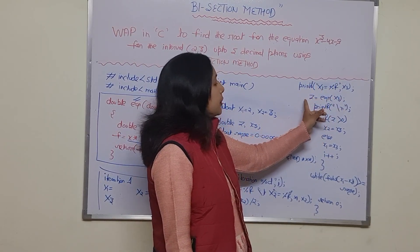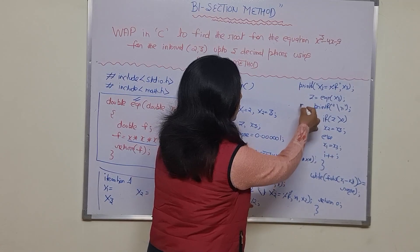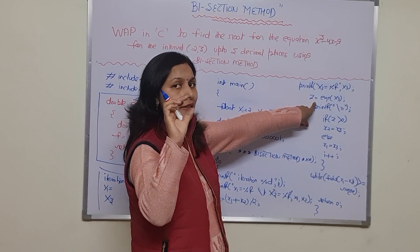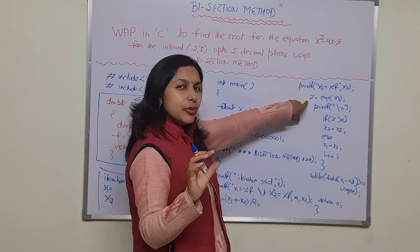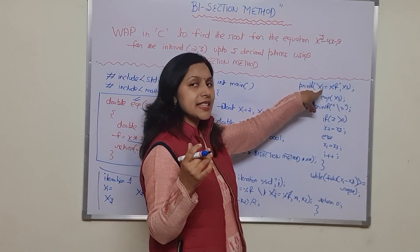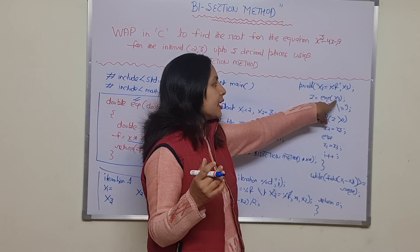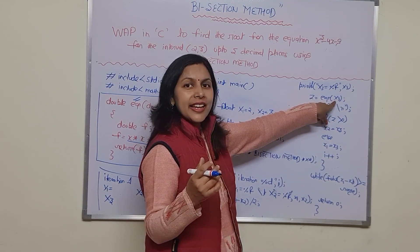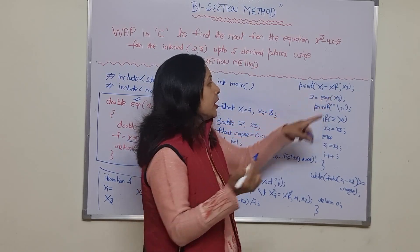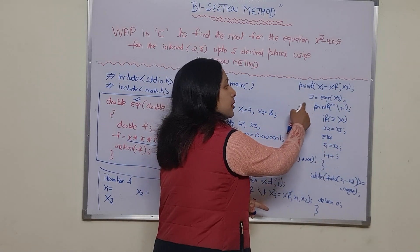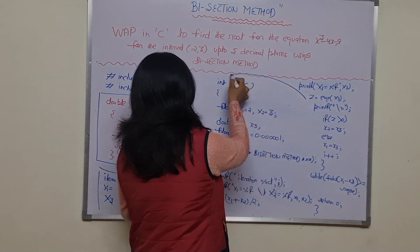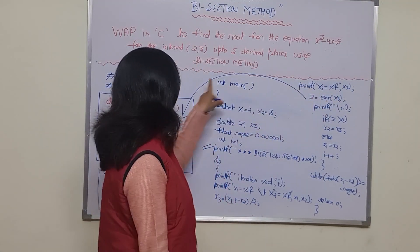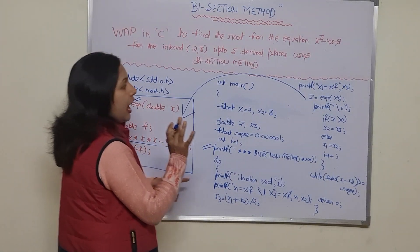After getting the mean, x3 = (x1 + x2) / 2, this value is put onto the screen. Then the if condition is worked out: we pass the value of x3 into the equation function using eqn(x3). In the first iteration, x3 = 2.5 is passed, and the compiler directly jumps to the function to evaluate it.